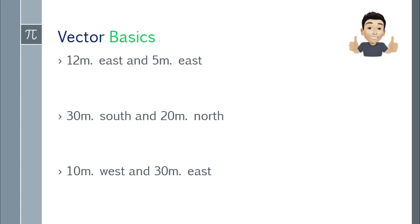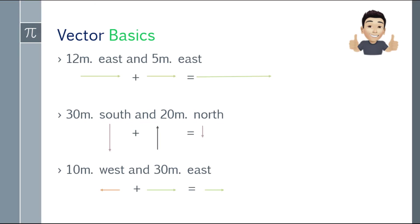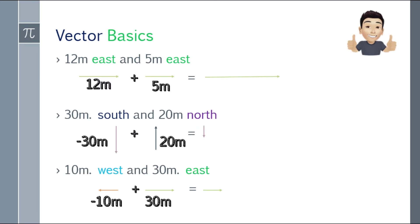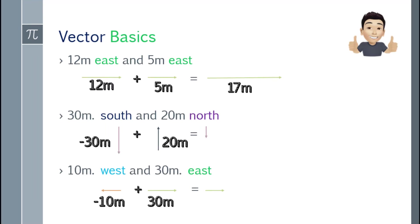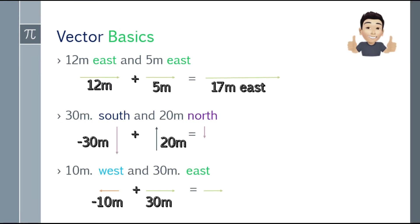So let's go into the basics first — how do we solve these? The first question is 12 meters east and 5 meters east. When they have the same direction, just add them. So that will be 12 plus 5, which equals 17 meters east.